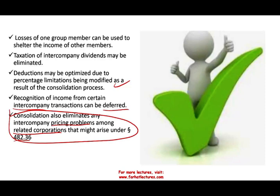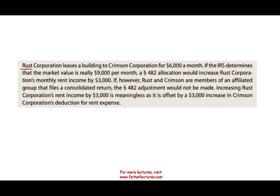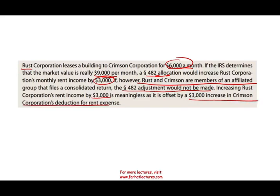Let's look at a specific example. Assume Rust Corporation leases a building to Cremson Corporation for $6,000. The IRS says the real fair market value is $9,000, not $6,000. A Section 482 allocation would increase Rust Corporation's monthly income by $3,000. However, if Rust and Cremson are members of an affiliated group filing a consolidated return, the 482 adjustment would not be made — or if it is made, it's not a big deal. Increasing Rust's rent income by $3,000 is meaningless because it's offset by a $3,000 increase in Cremson's rent expense deduction. So it will offset each other, and there's no benefit to the adjustment. Filing a consolidated return avoids problems like this.